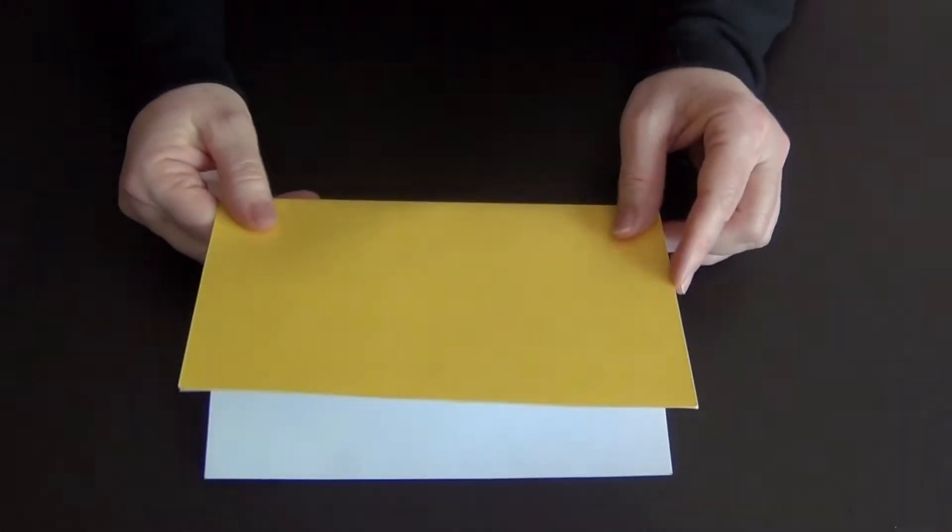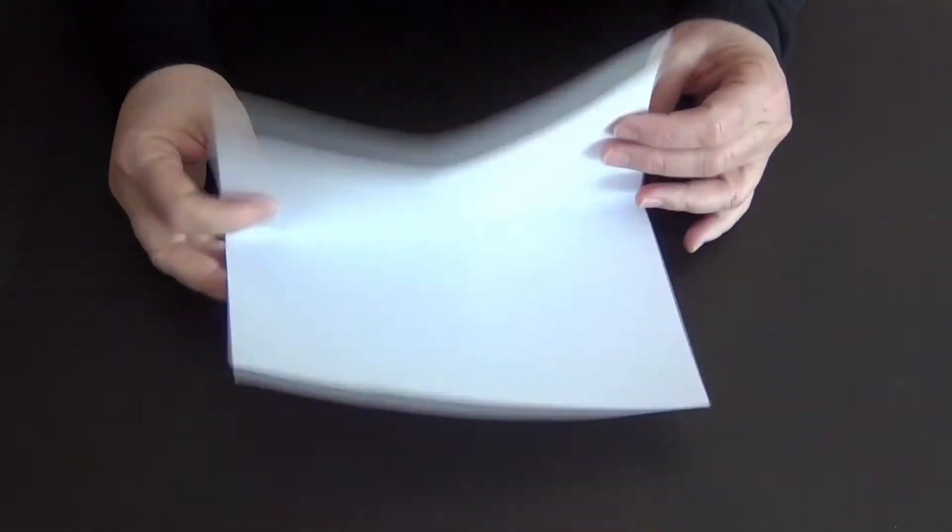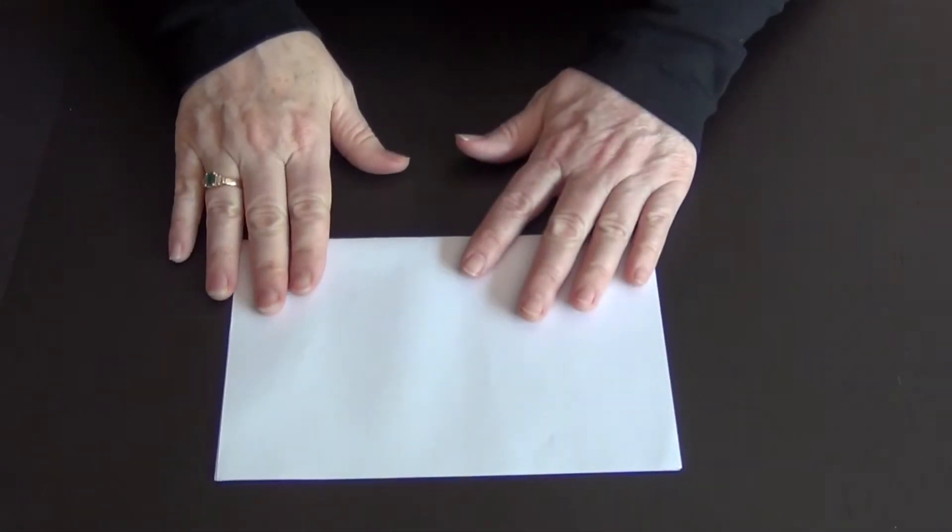So now you have this. Our card's going to face this direction. We're going to set the cover to the side for a minute and now we're going to get the inner pop-up piece ready.